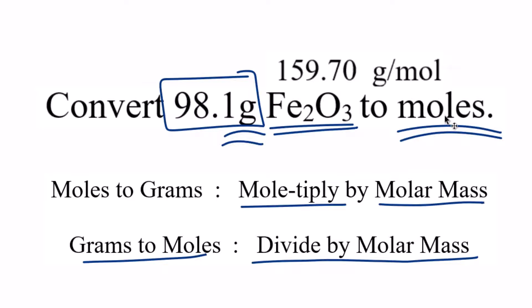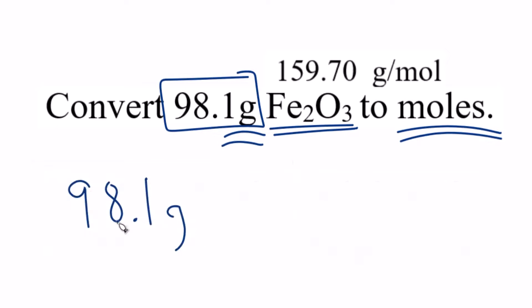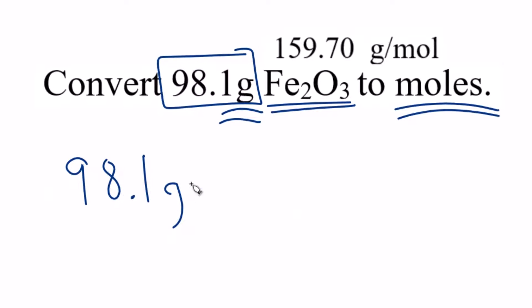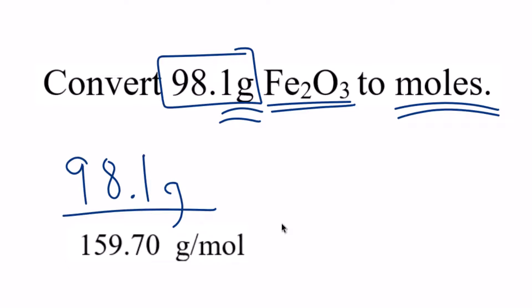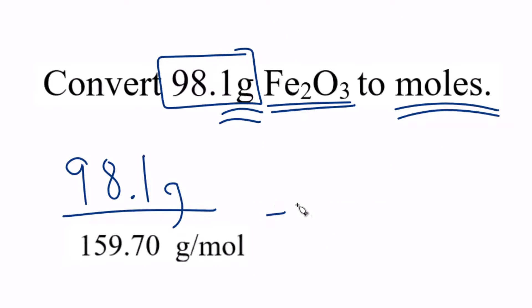So let's convert these grams to moles. We have our 98.1 grams. Because we're going from grams to moles, we're going to divide by the molar mass here of Fe2O3. And now you can see when we divide, we have grams up top and on the bottom. They cancel out. We're left with moles. So we know we did it right. And we end up with 0.614 moles of Fe2O3.